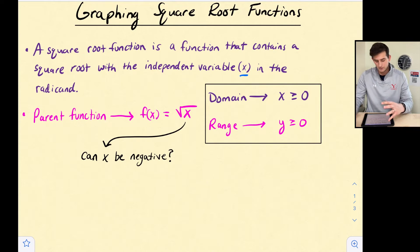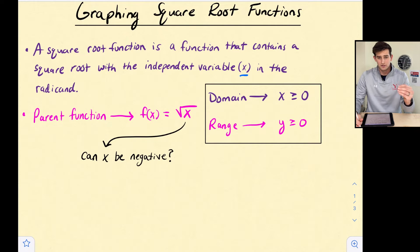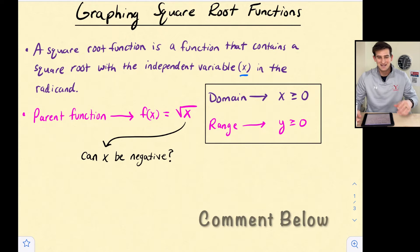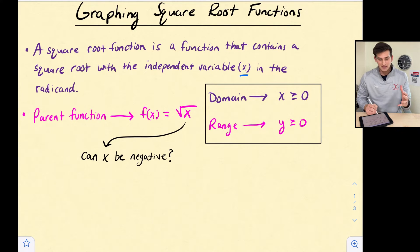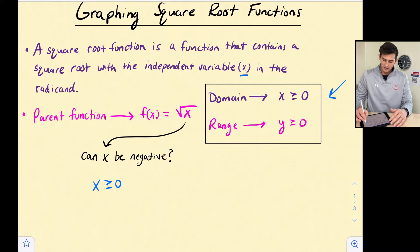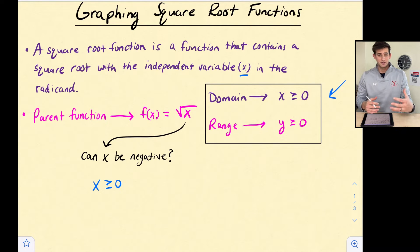Before we talk about the domain and the range, let's think about this for a minute. If we have a number under a square root, can that number be negative? No, it cannot be negative. So if x can't be negative, then we're going to say that x has to be greater than or equal to zero, and that is where our domain comes into play. So our domain is x is greater than or equal to zero.